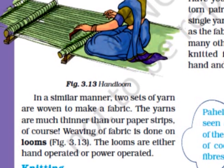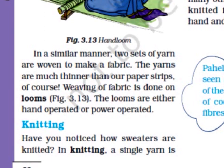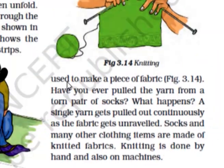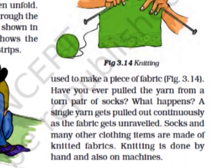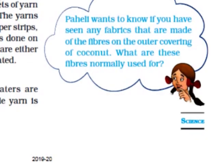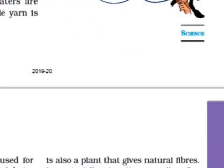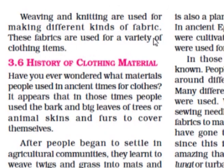Knitting: You must have seen your grandmother or mother knitting sweaters. In knitting, a single yarn is used to make a piece of fabric. Have you ever pulled the yarn from a worn-out pair of socks? A single yarn gets pulled out continuously as the fabric gets unraveled. Socks and many other clothing items are made of knitted fabric. Knitting is done by hand and also on machines. Weaving and knitting are used for making different kinds of fabric.